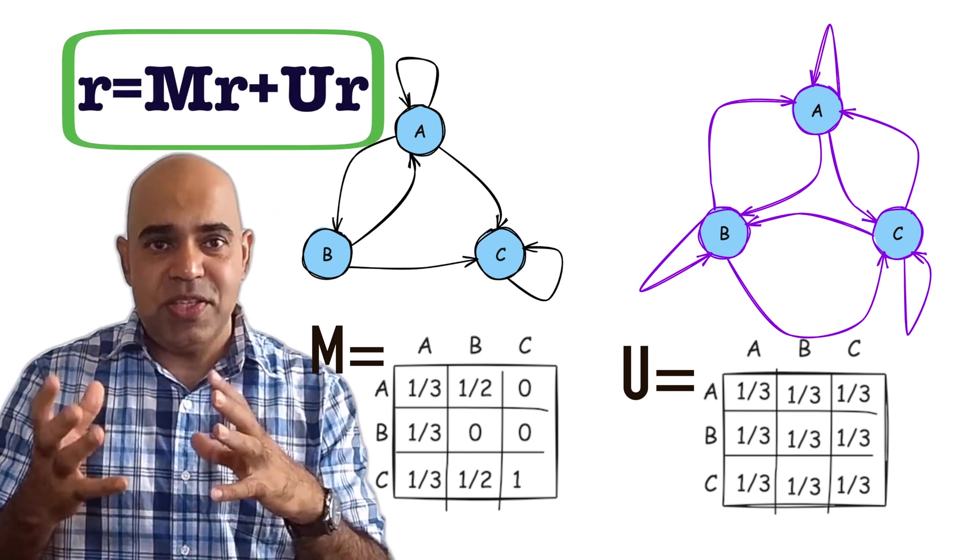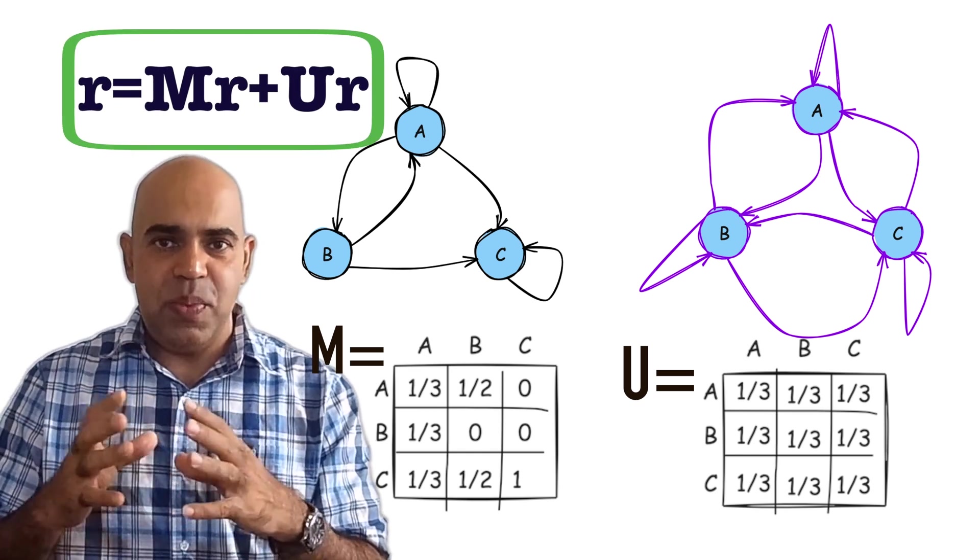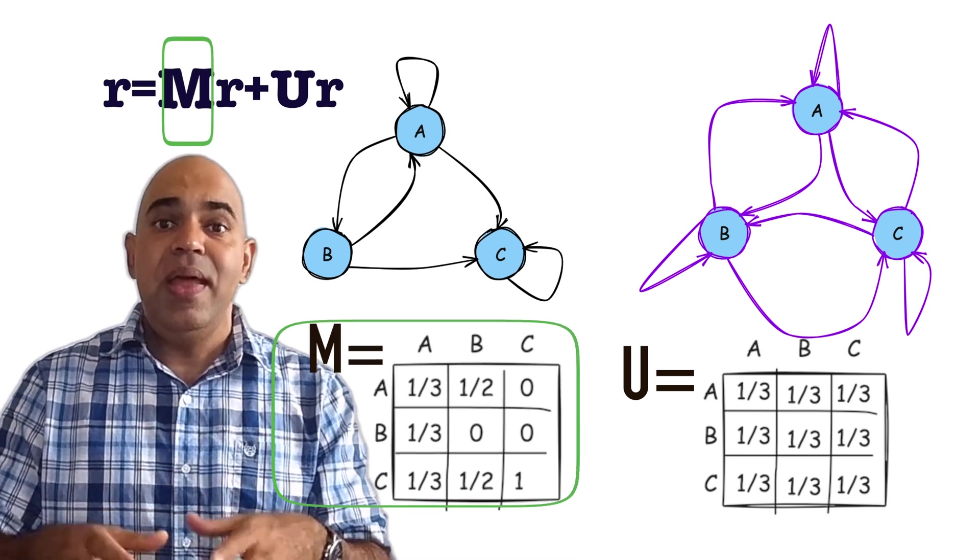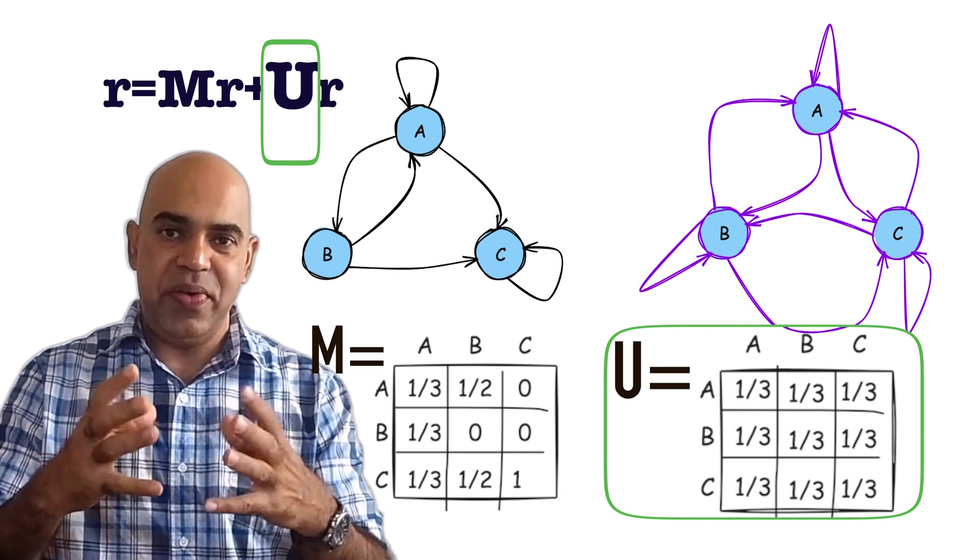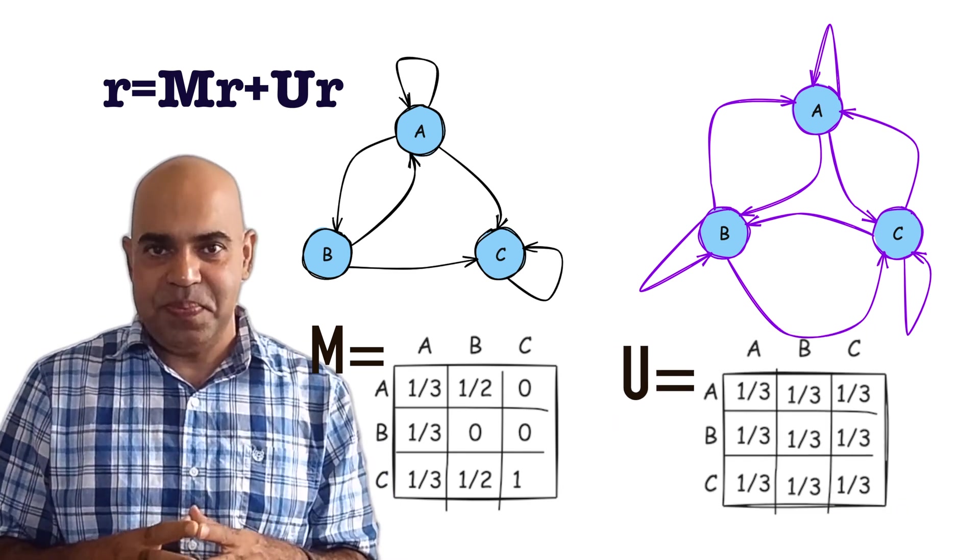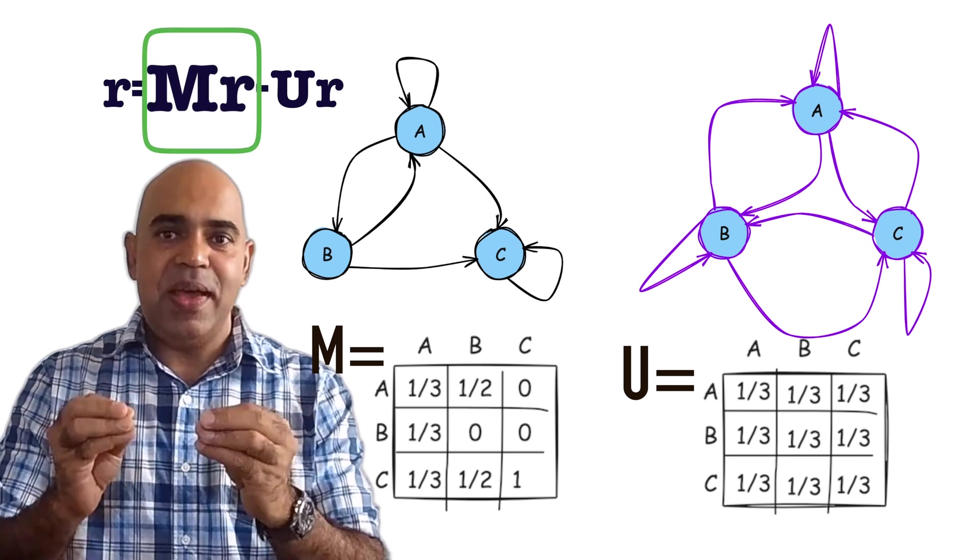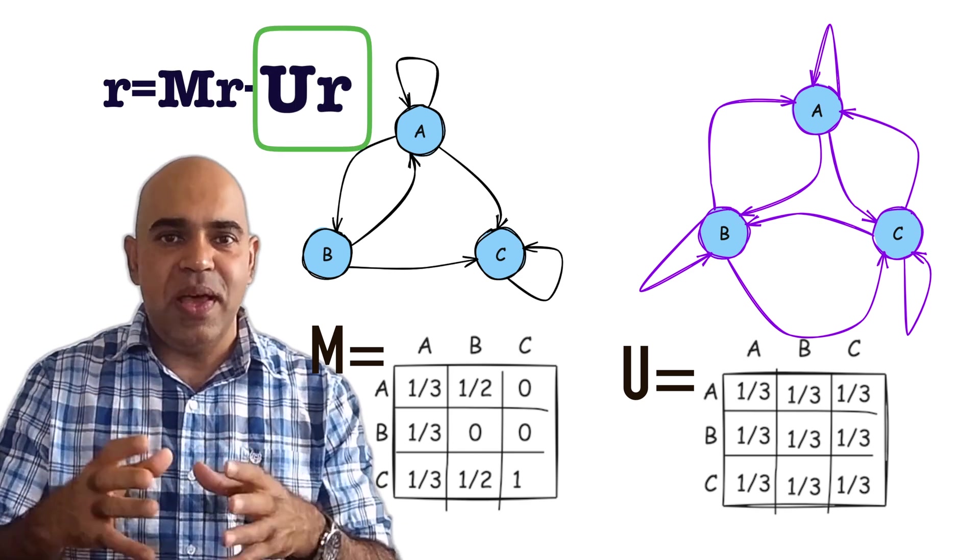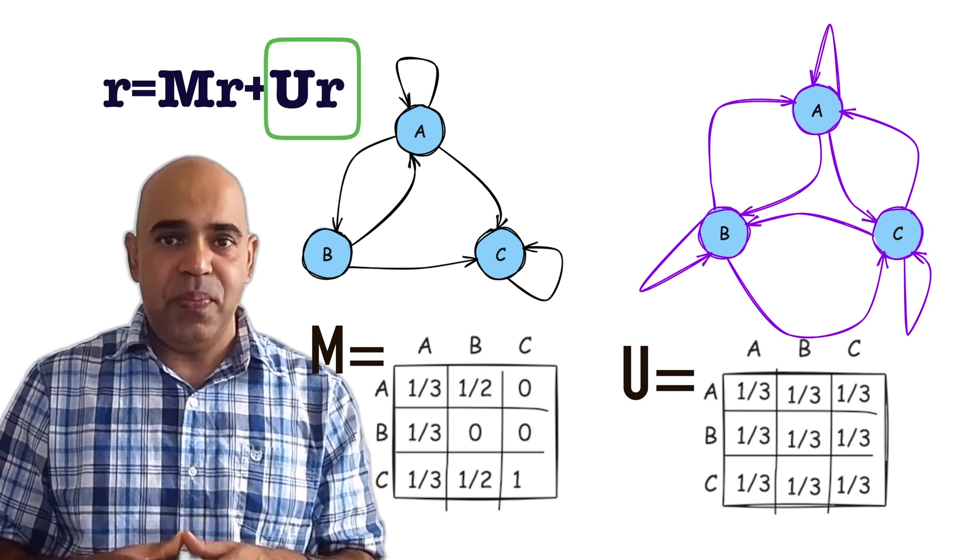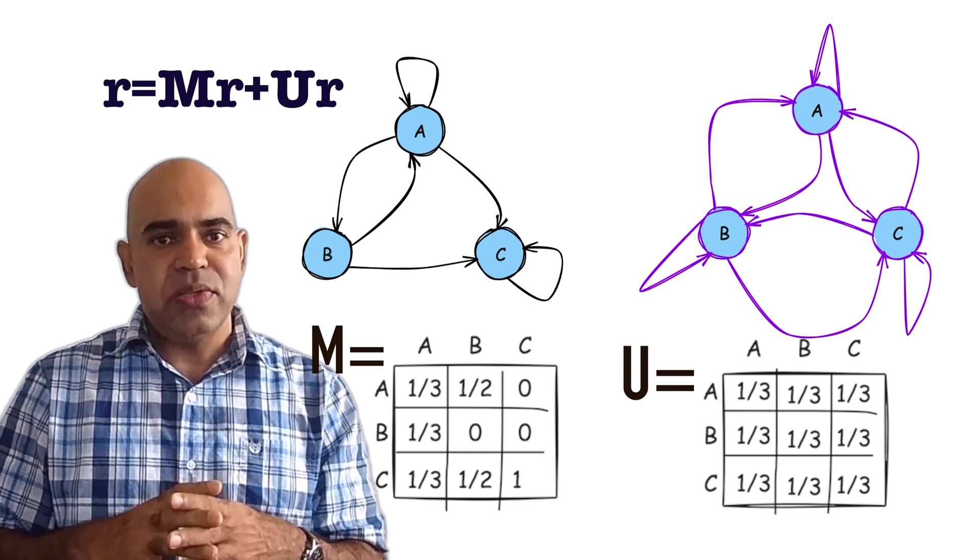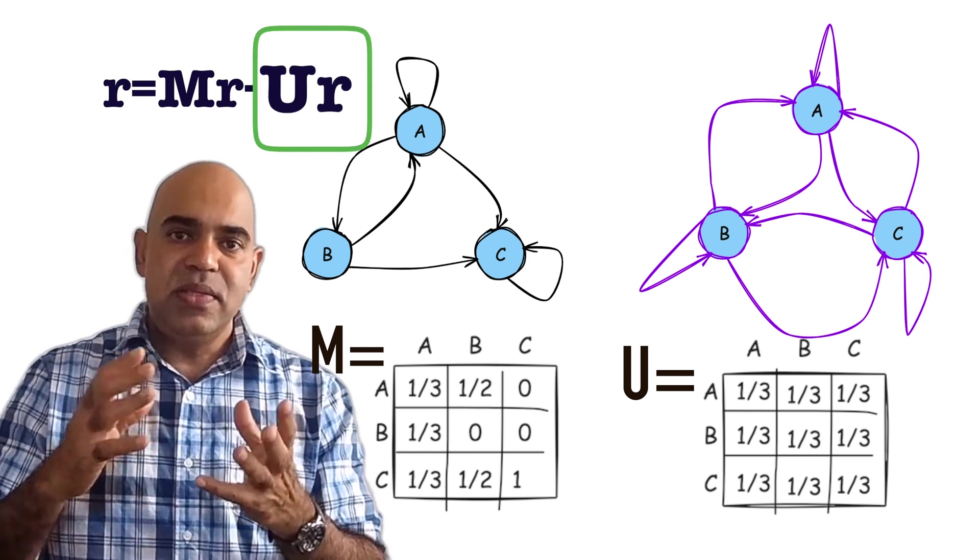Here, in this formula, we are saying that both the hyperlink network transition matrix M and teleportation network transition matrix U have equal importance. Note that M times R is a column vector. Also U times R is a column vector. M times R sums up to 1. Also U times R sums up to 1.